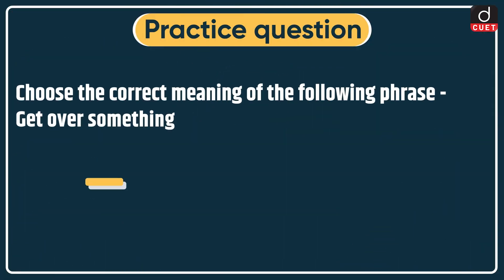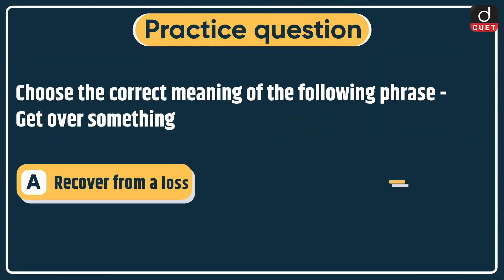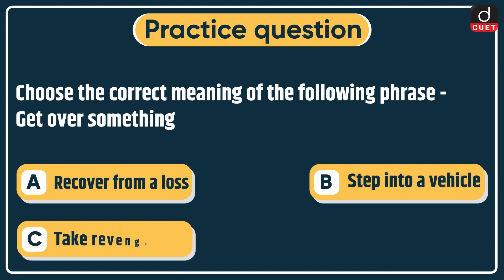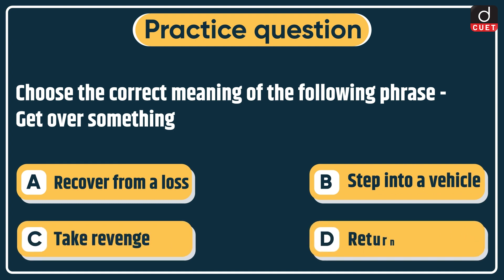Now it's time for the practice question. Choose the correct meaning of the following phrase: 'Get over something' — Recover from a loss, Step into a vehicle, Take revenge, or Return. Send the answer in the comment section. Stay tuned for the next episode. Thanks for watching.